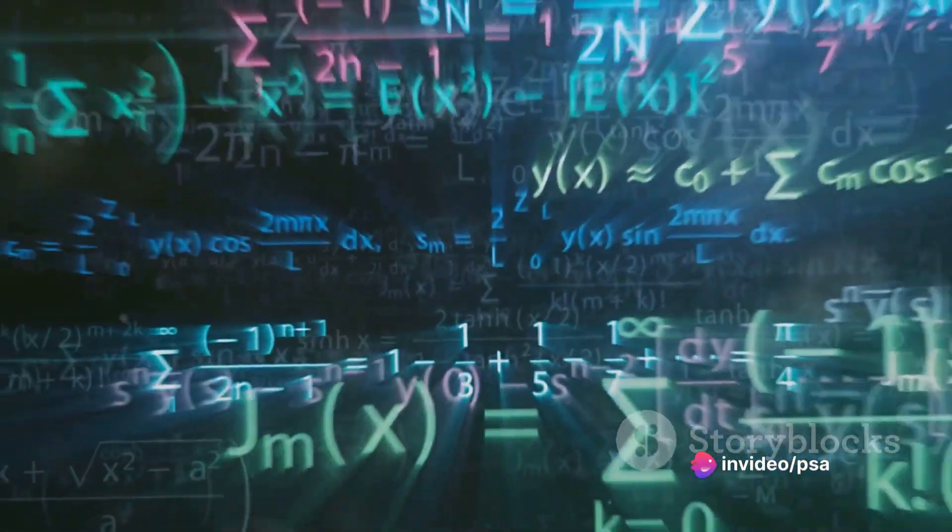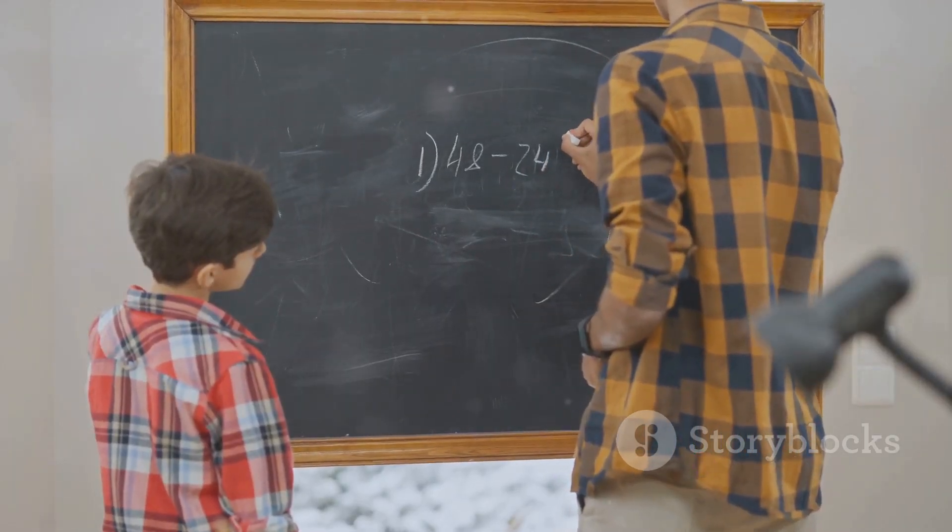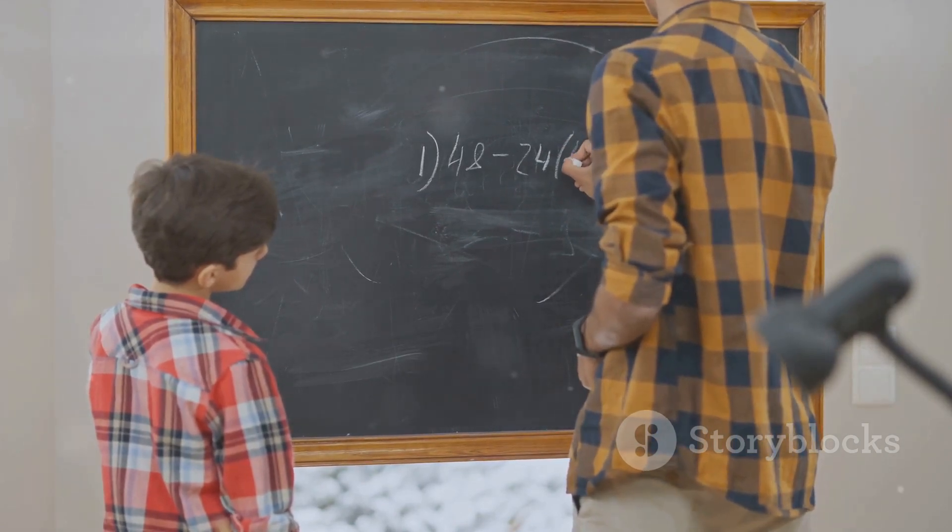Then at 24, he published his magnum opus, Disquisitiones Arithmeticae, which revolutionized number theory.